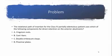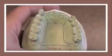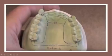We have options: cingulum rests, eye bars, casted, double embrasure clasps, and proximal plates. This is the situation they are talking about — we have a Kennedy Class 4 edentulous area.